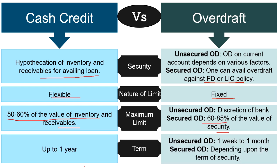Regarding term: banks offer cash credit facility for a period of 1 year, meaning the customer can use this facility and repay the sum withdrawn within 1 year. In case of secured overdraft, the term depends upon the term of the security — for example, if your FD is for 3 years, then the term of overdraft will also be 3 years. For unsecured overdraft, the term ranges from 1 week to 1 month.